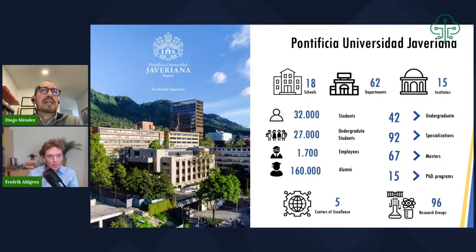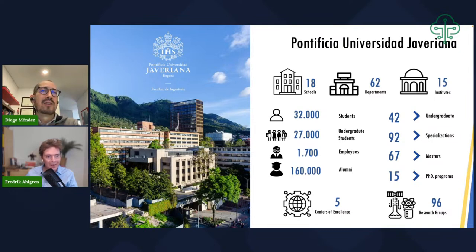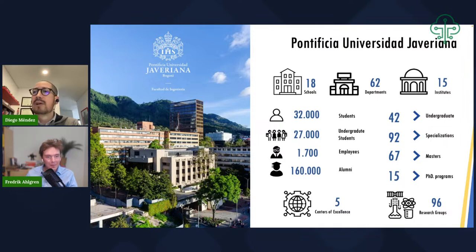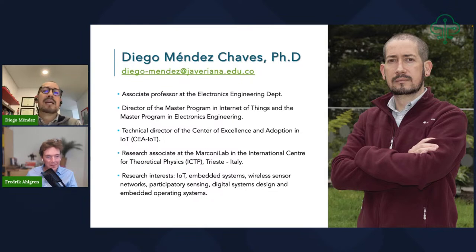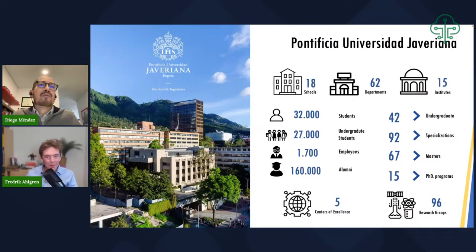Javeriana University is in Bogotá, Colombia. We have 18 schools, 62 departments, and more than 32,000 students. This is a picture of our campus — really close to the mountains. The big tower you see is the new engineering building for labs. You're more than welcome to visit; just send me an email. My contact is right there if you need to get in touch.